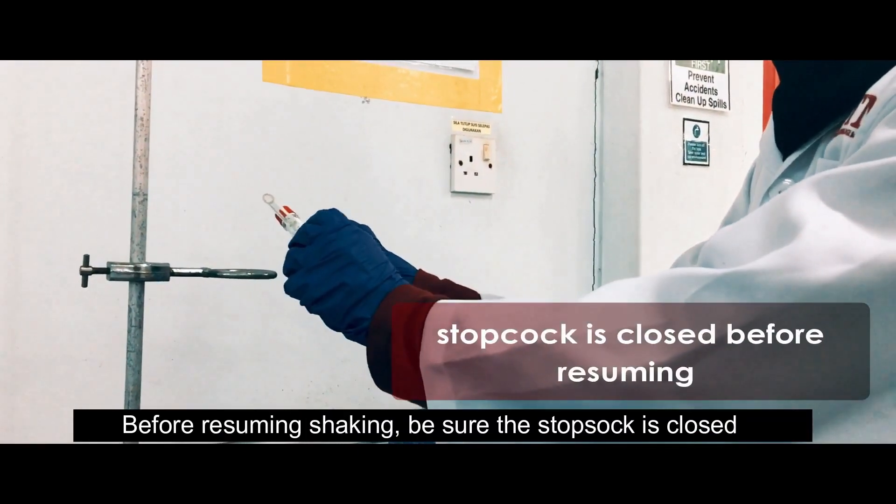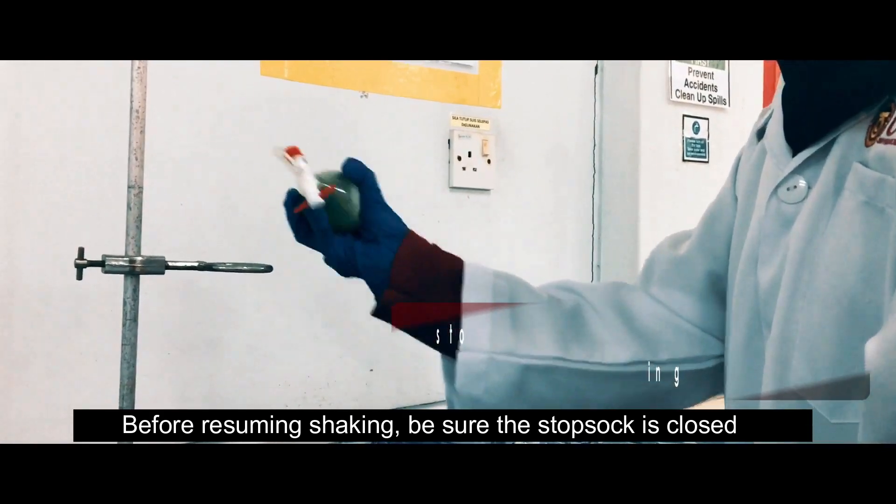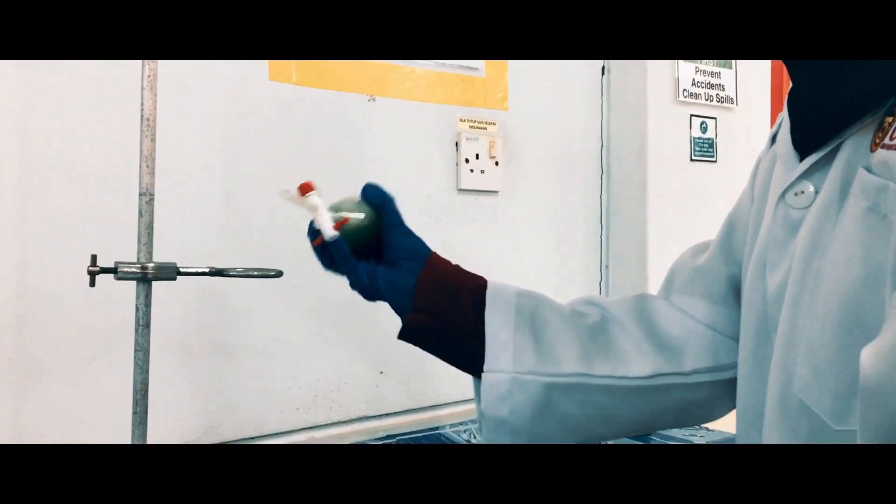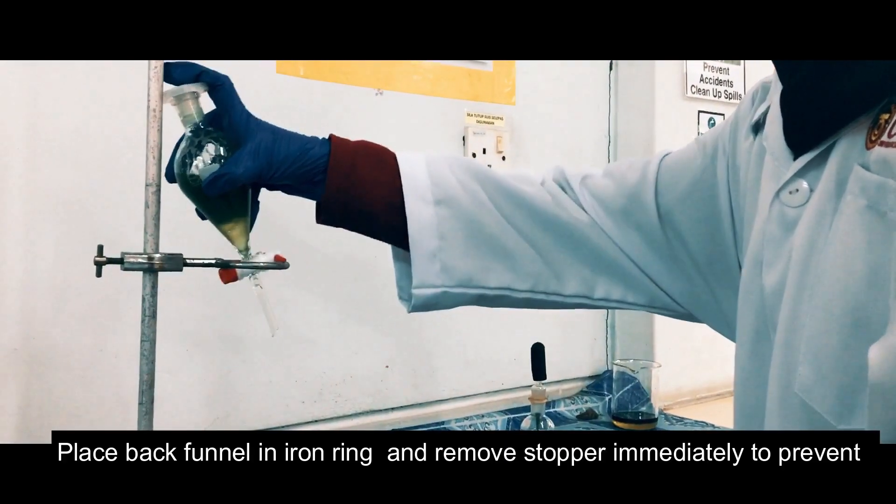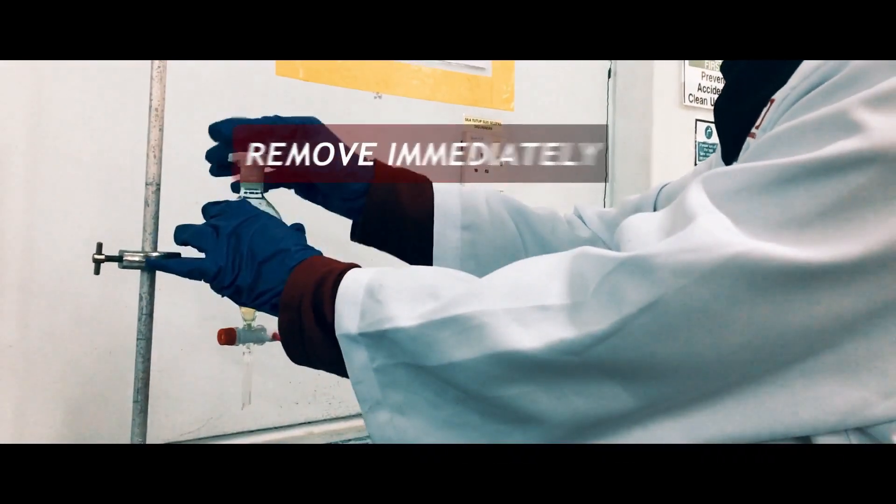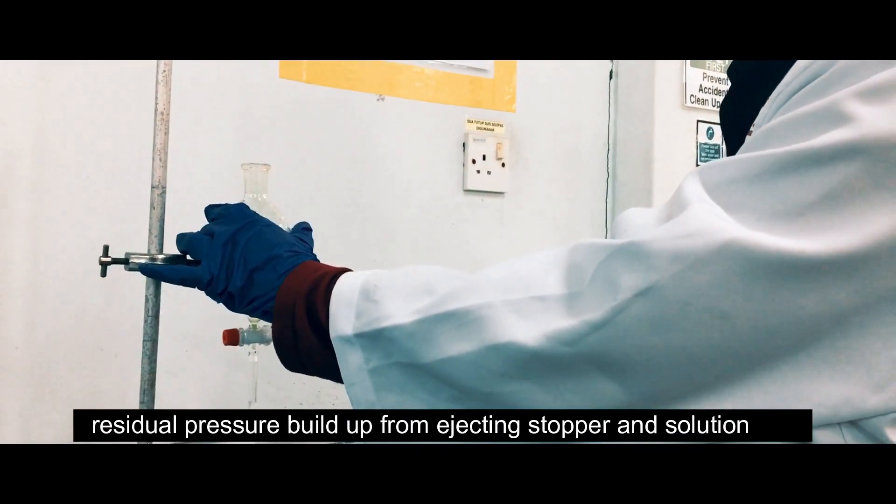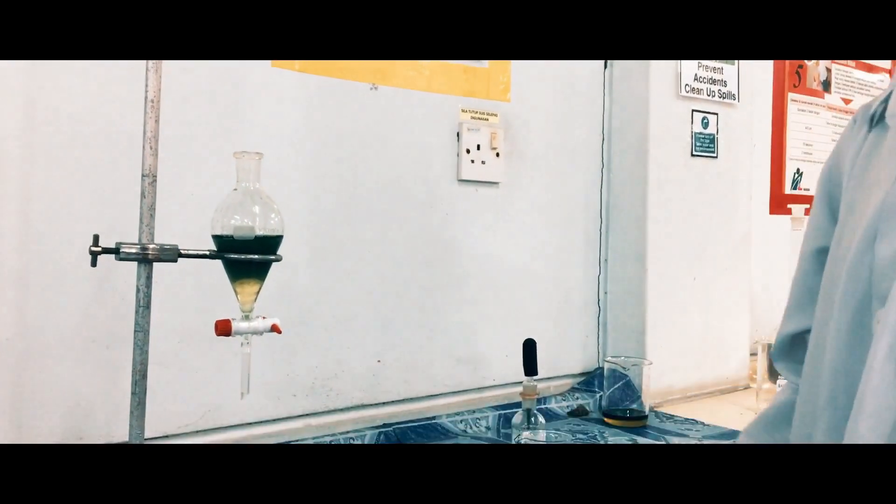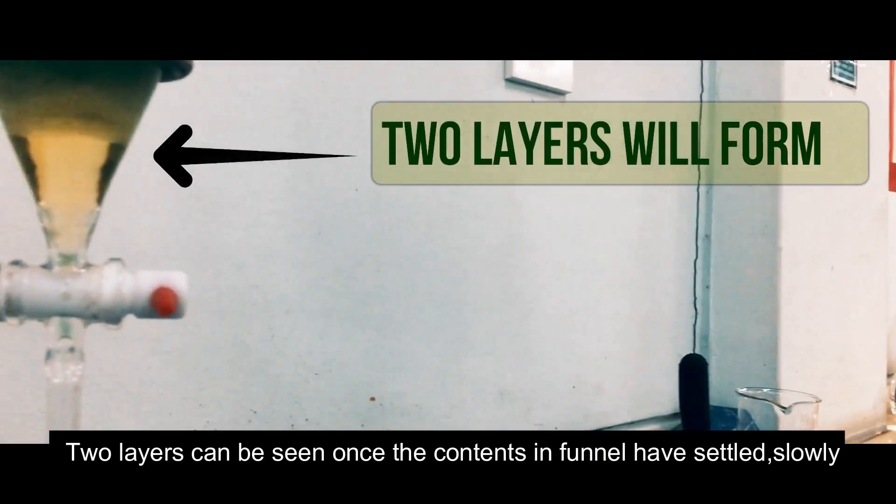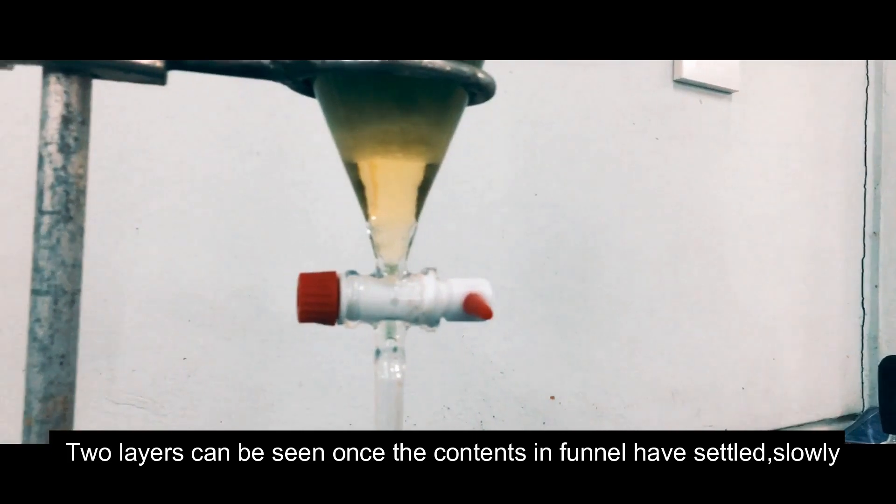Before resuming shaking, be sure the stopcock is closed. Place back funnel in iron ring and remove stopper immediately to prevent residual pressure build up from ejecting stopper and solution. Two layers can be seen once the content in funnel has settled.